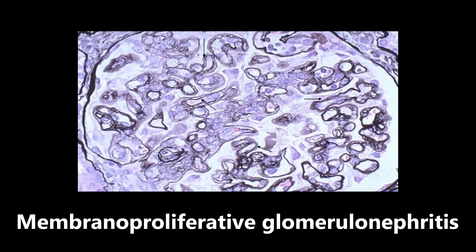This next image is an example of membranoproliferative glomerulonephritis. The classic description associated with this is the tram track appearance, which you can see really well right here where this arrow is pointing. This refers to the basement membrane, which has that tram track appearance seen under light microscopy. Again, the glomerulonephropathies are very high yield — the descriptions of how they look on light microscopy as well as electron microscopy.